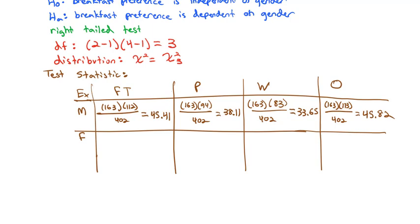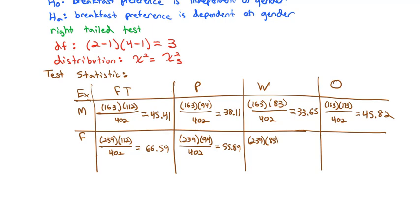Now for the females. The female row total is 239. For French toast: 239 times 112 divided by 402 equals 66.59. For pancakes: 239 times 94 divided by 402 equals 55.89. For waffles: 239 times 83 divided by 402 equals 49.35. For omelets: 239 times 113 divided by 402 equals 67.18. This second table gives us all the expected values based on the row and column totals.